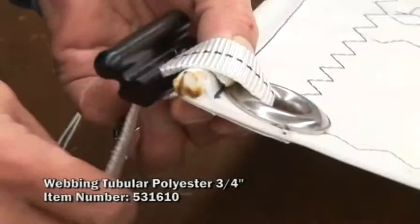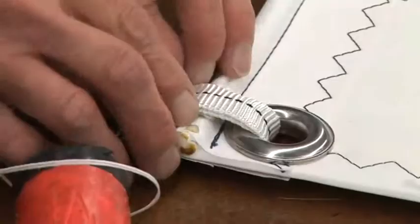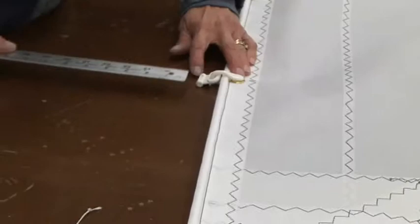We're using a three-quarter inch polyester tubular webbing. You can see Deb wrapping it through that cringle at the clue corner. So she wraps it around there double, and then she'll use pre-waxed twine and a hand needle and stitch a figure eight to secure the outhaul slug to the clue corner.